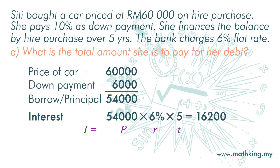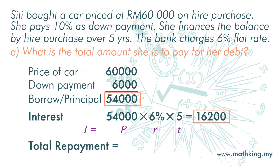To get the total amount to pay, we need to add the principal loan amount to the interest to pay. So it is 54,000 plus 16,200, and the total repayment amount is 70,200 ringgit.